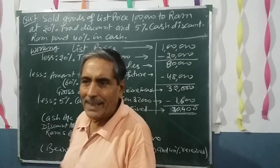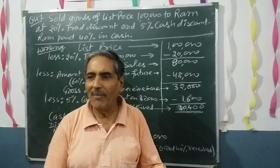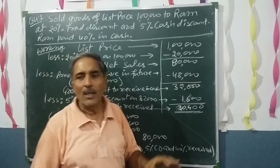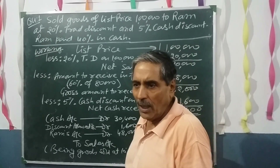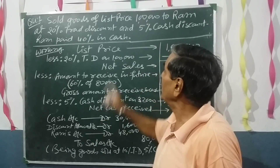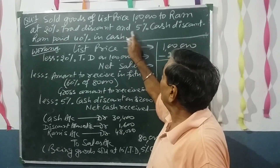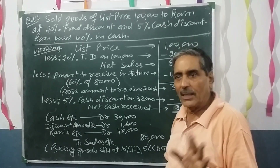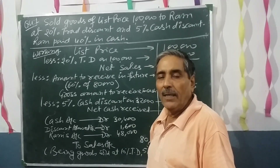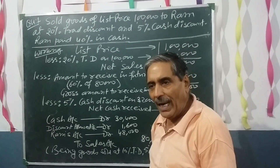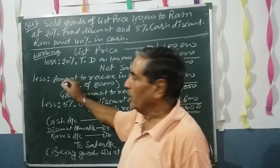We have now understood two concepts: trade discount and cash discount. Both are theoretically clear. Now with the help of this illustration, it will become even clearer. The question: goods of list price ₹1 lakh were sold to Ram at 20% trade discount and 5% cash discount. Ram paid 40% in cash. Since he is paying 40% in cash now, he will give the remaining 60% in future, and cash discount will be allowed only on the amount he pays now.